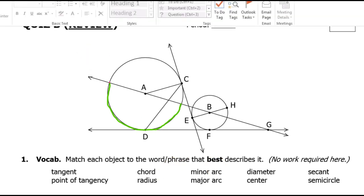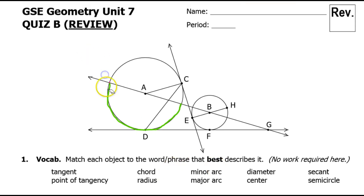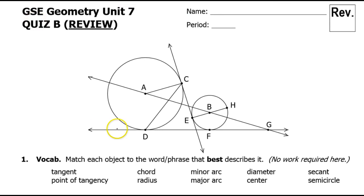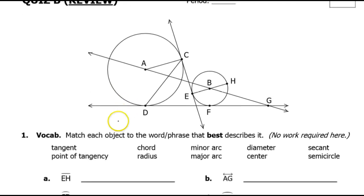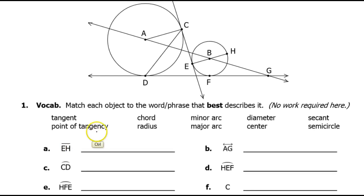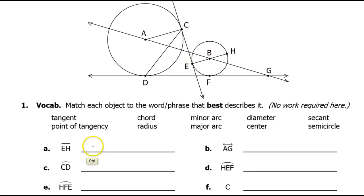Now let's do a little bit of matching. Segment EH — notice the segment symbol over the top of it. Segment EH is a diameter. It's a chord that passes through the center, so that is a diameter.